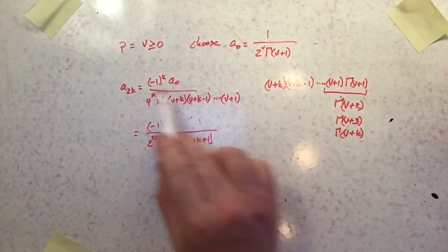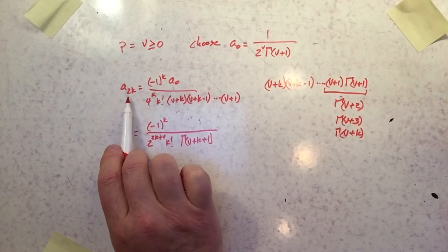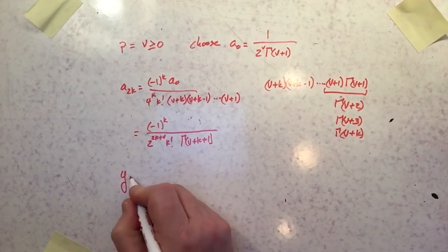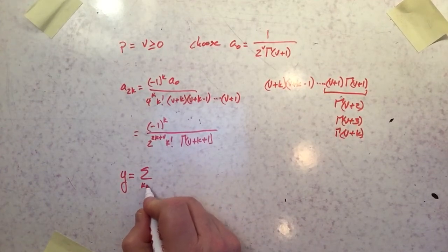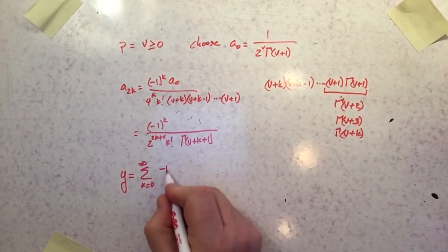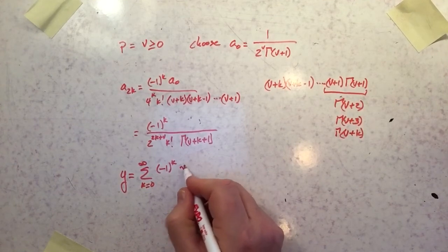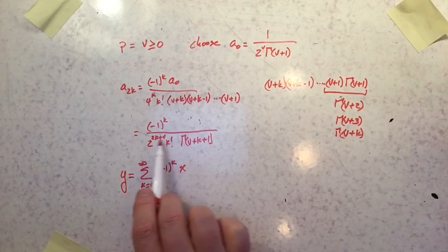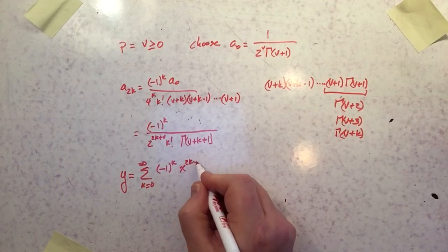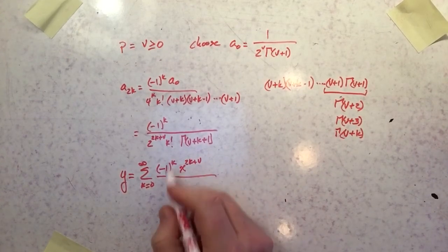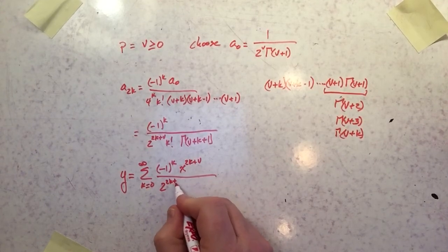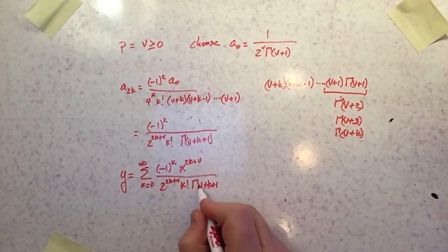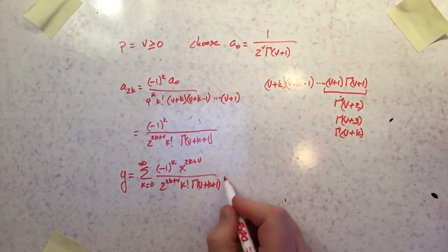And now I've represented this 2kth term of a in a much easier way. The anon is gone and now we've got everything else. So now we can write what the y is. Y is the summation from k equals 0 to infinity of negative 1 to the k. This will produce 2k plus v terms. So it's going to be x to the 2k plus v as our power. And then the denominator is going to be 2 to the 2k plus v times k factorial times gamma of v plus k plus 1.